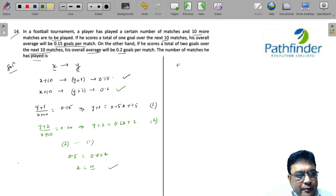What can be an alternate approach? An alternate approach is recognizing that in the next 10 matches, if he scores one goal extra from Y plus 1, he goes to Y plus 2. So he scores one goal extra and the average over the entire X plus 10 matches increases by 0.2 minus 0.15, that is 0.05.